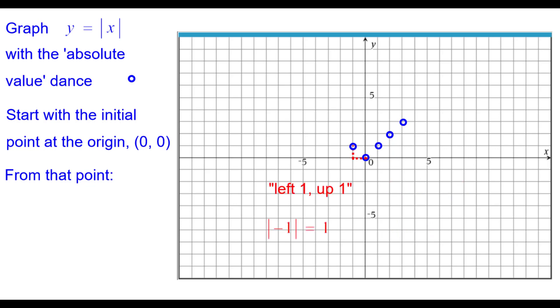On the other side, left 1 up 1, the absolute value of negative 1 is positive 1. Left 2 up 2, absolute value of negative 2 is positive 2. And left 3 up 3, absolute value of negative 3, positive 3.